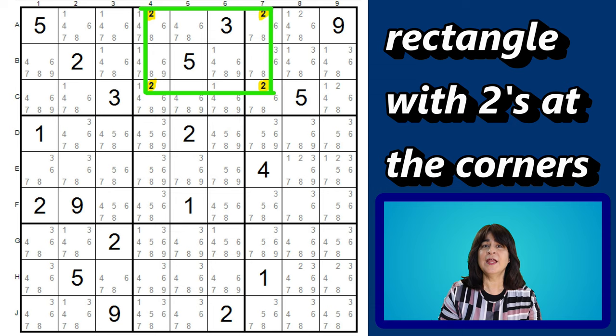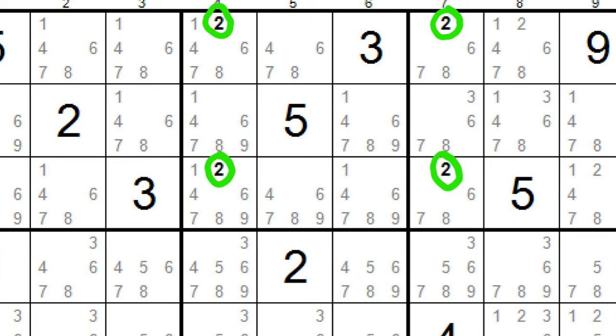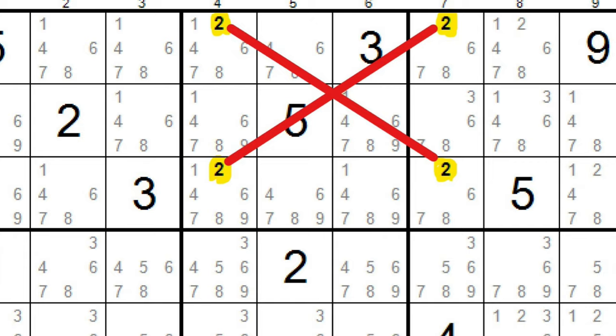We can also identify an X pattern here, since if this is the two in row A, then this has to be the other two in column C. But if this is the two in row A, then this would be the other two in row C. And so this forms an X pattern, as you see here.